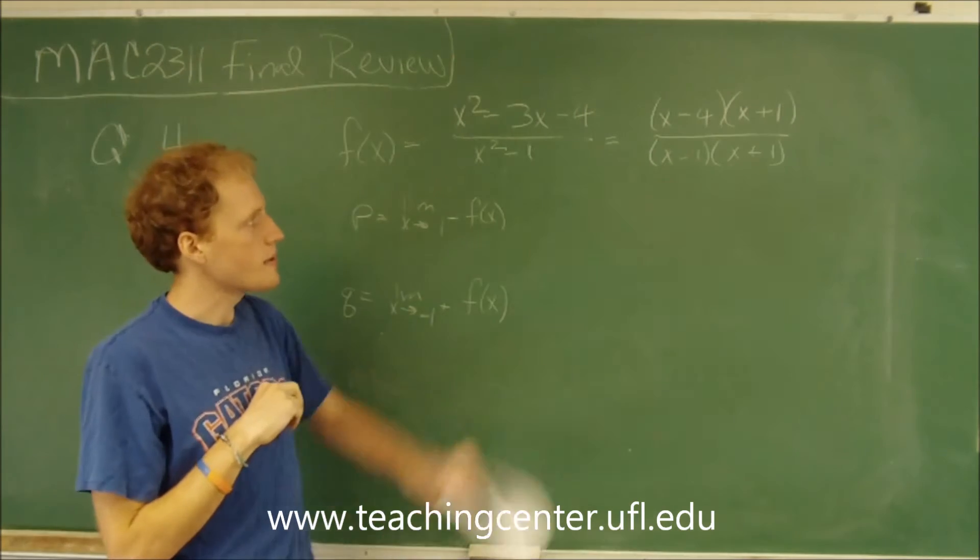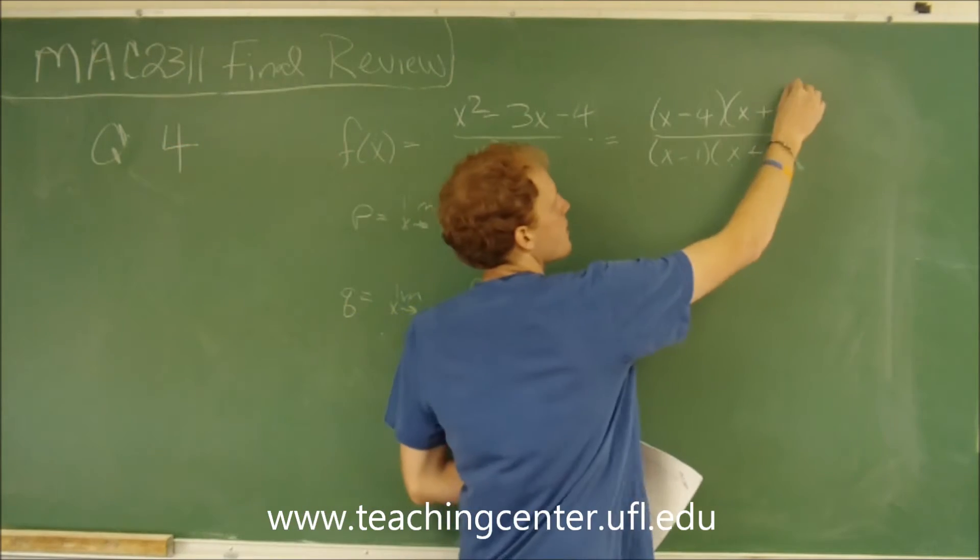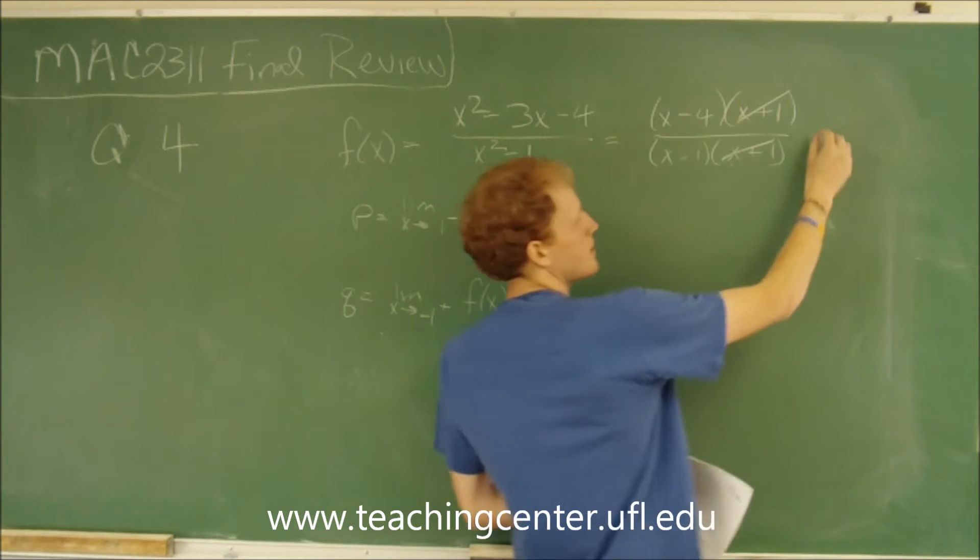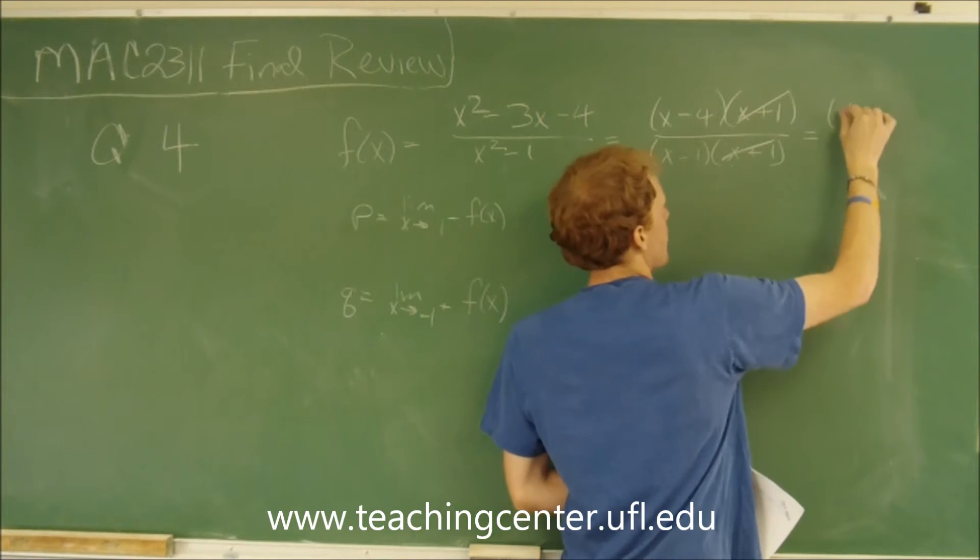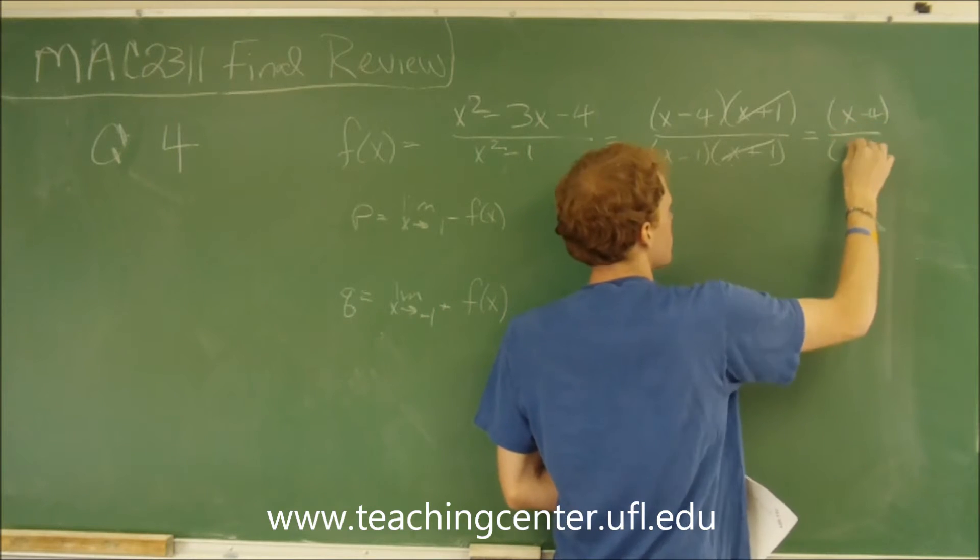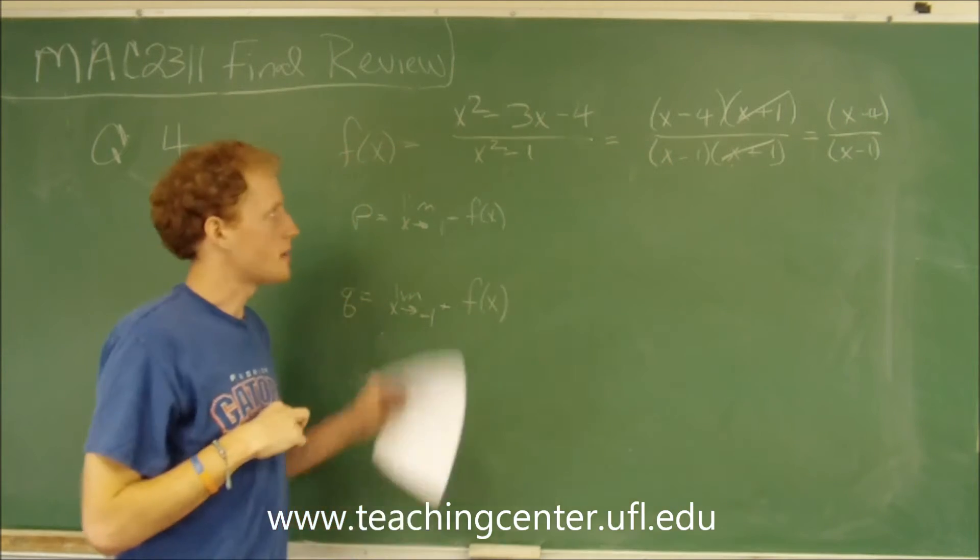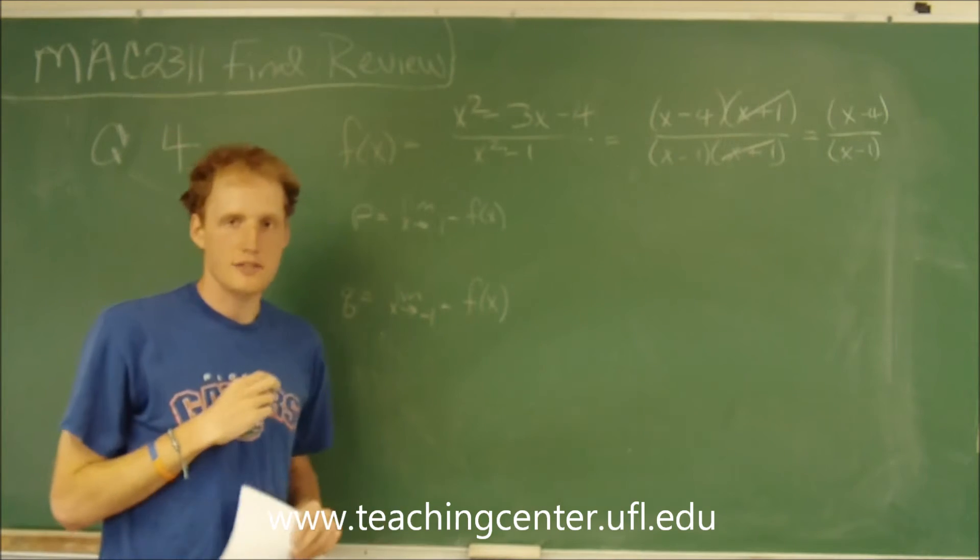We see from the factorization that the x plus 1's cancel out. So that will leave us with x minus 4 over x minus 1. So that would be what f(x) reduces to.